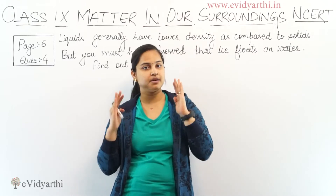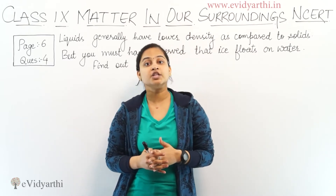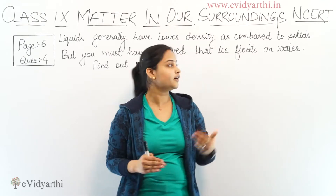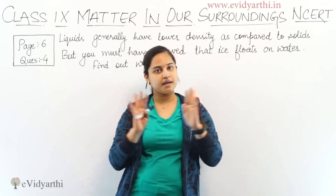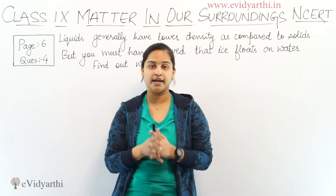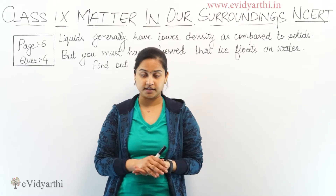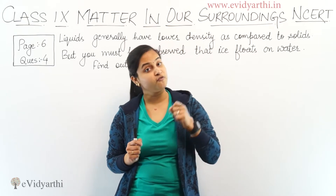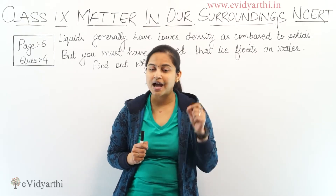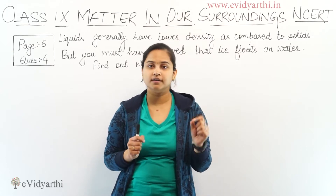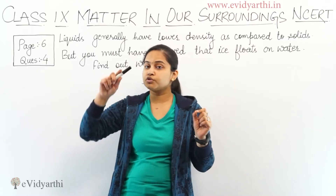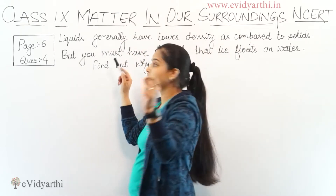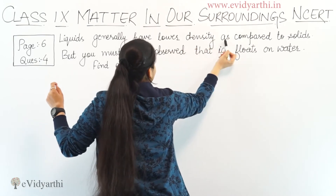The question is telling us that liquid density is less as compared to solid density. This is a general rule that we generally observe. But we also observe that ice is floating on water, where ice is in a solid form and water is in a liquid form. So the general rule states that liquids generally have lower density as compared to solids.